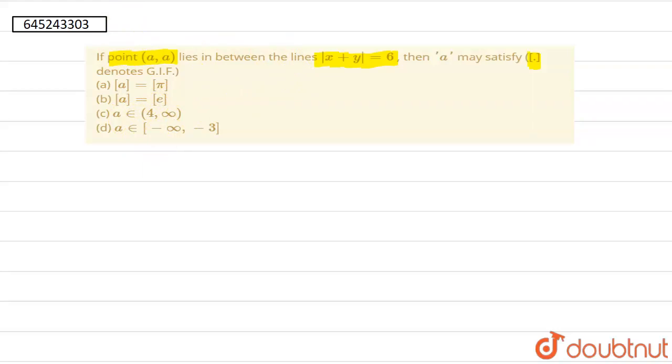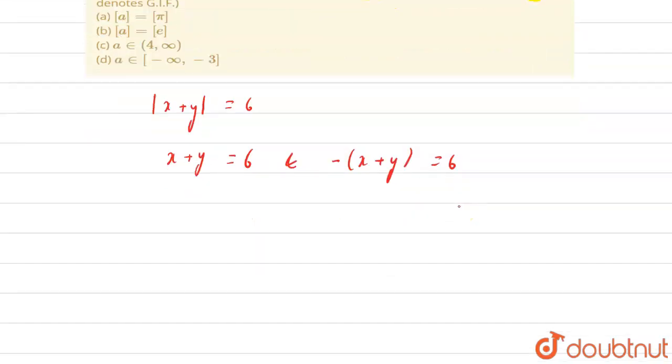So for this if we first write our equation then they said that x plus y is equal to 6. So this will give two equations. First is x plus y equal to 6 and the other is minus x plus y equal to 6. Now we can also write this equation as x plus y equal to minus 6. So we have two equations.